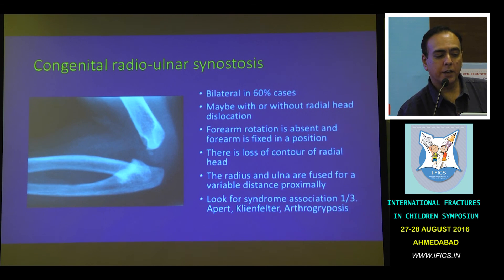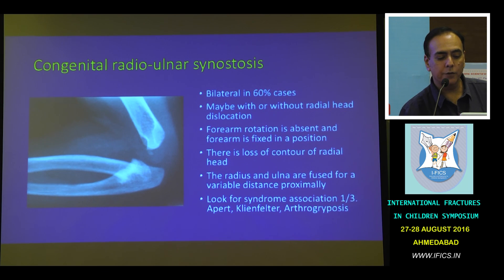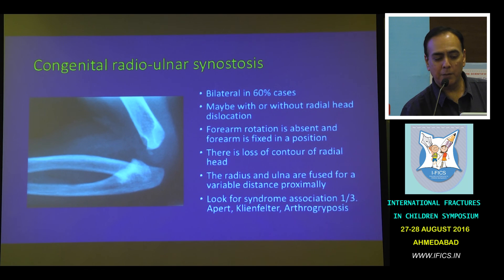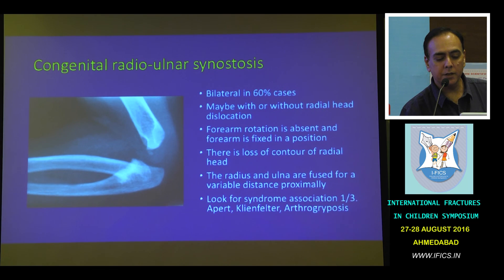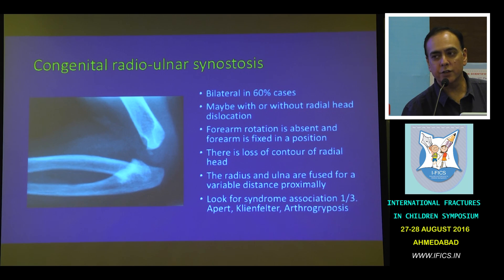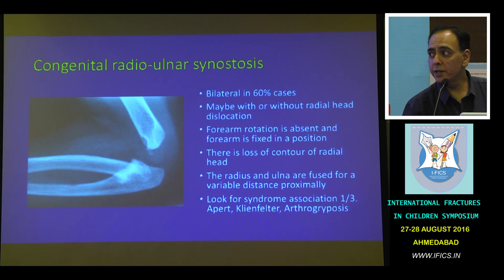Regarding congenital radioulnar synostosis, the radial head is not in line with the capitellum, which can cause confusion. These are often bilateral, with or without dislocation, and forearm rotation is absent. The radius and ulna are fused for a variable distance, and syndromic associations can be found in about one third of cases.